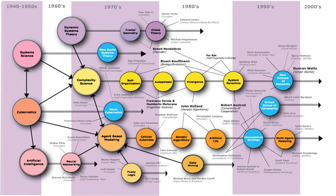Computational sociology is a branch of sociology that uses computationally intensive methods to analyze and model social phenomena. Using computer simulations, artificial intelligence, complex statistical methods, and analytic approaches like social network analysis, computational sociology develops and tests theories of complex social processes through bottom-up modeling of social interactions. It involves the understanding of social agents, the interaction among these agents, and the effect of these interactions on the social aggregate.